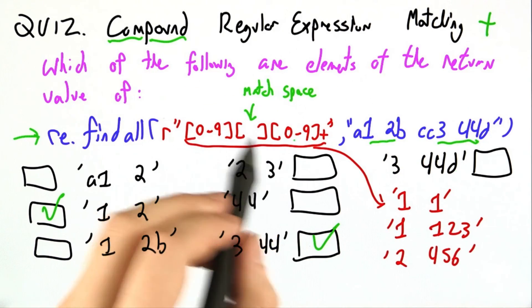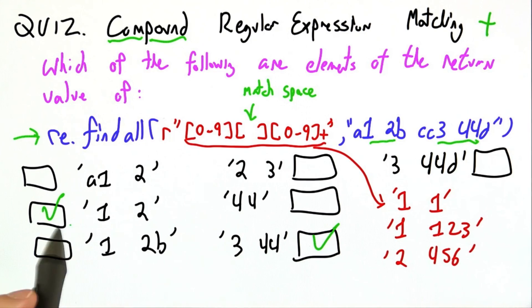3 space 44d. This has the wrong format. Again, we're not matching any letters. So just these two.